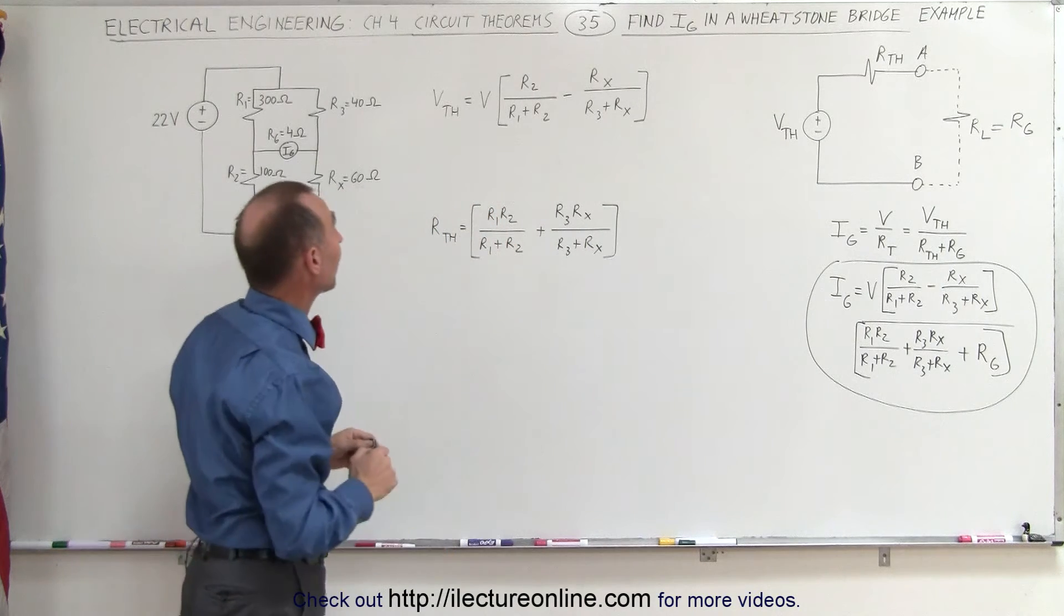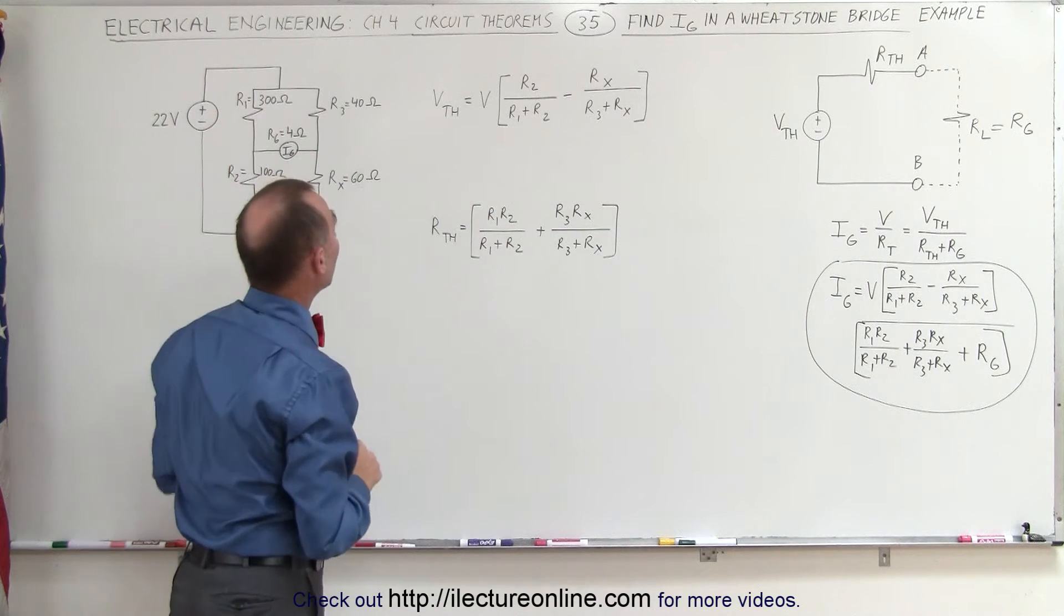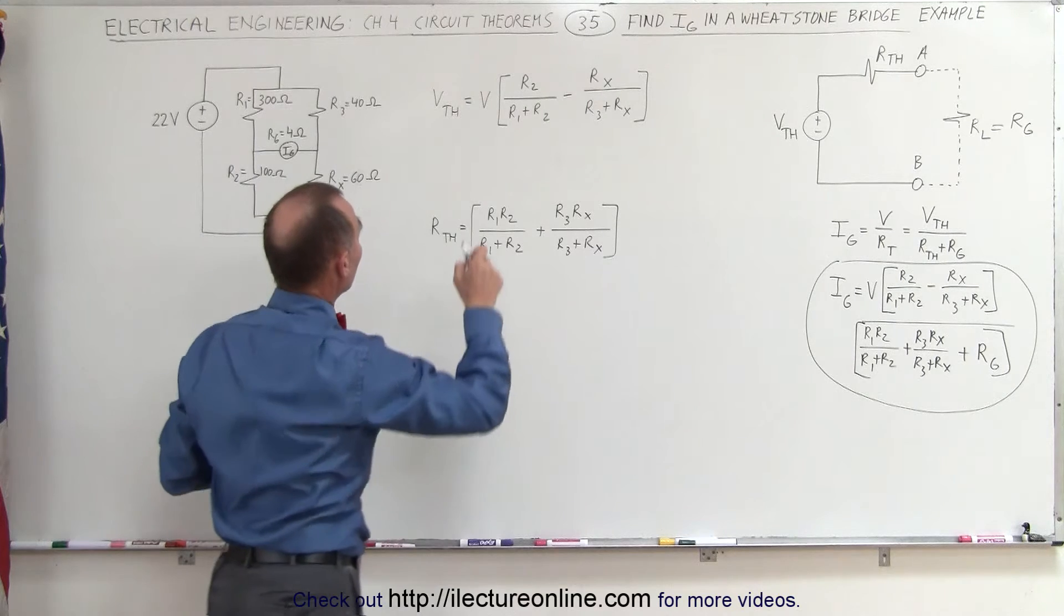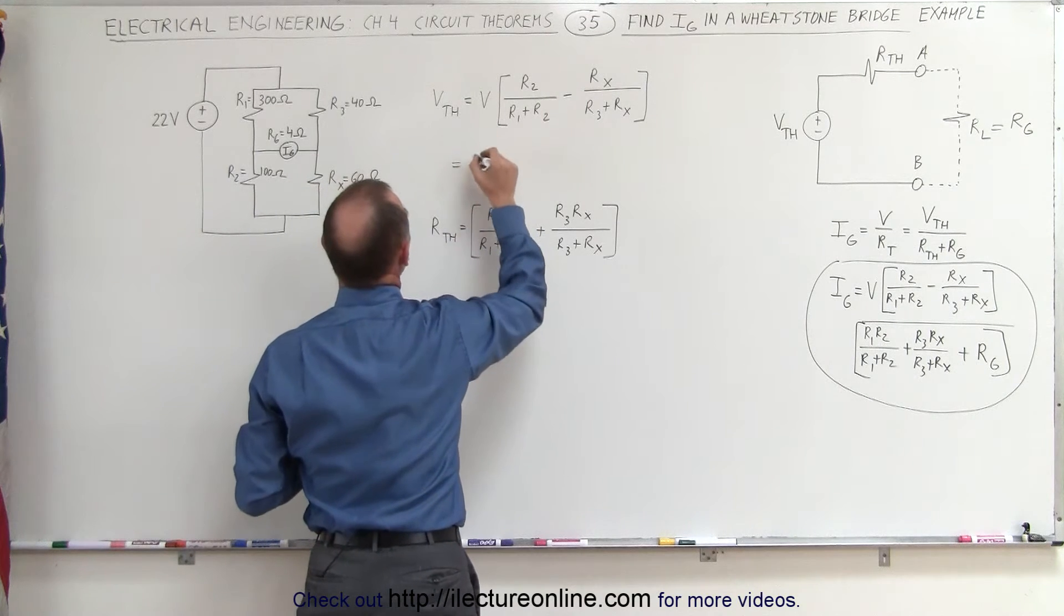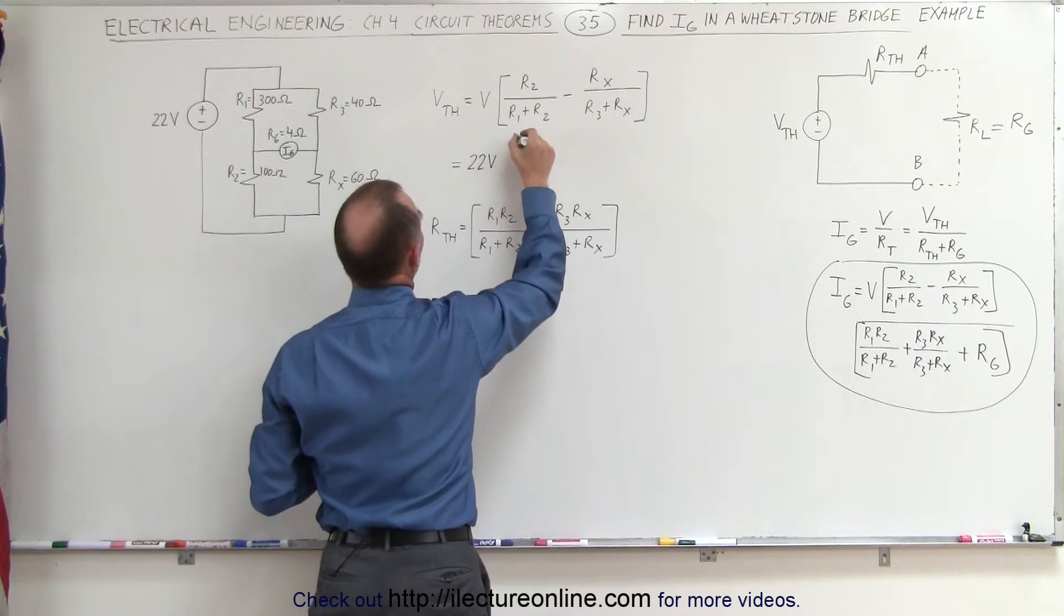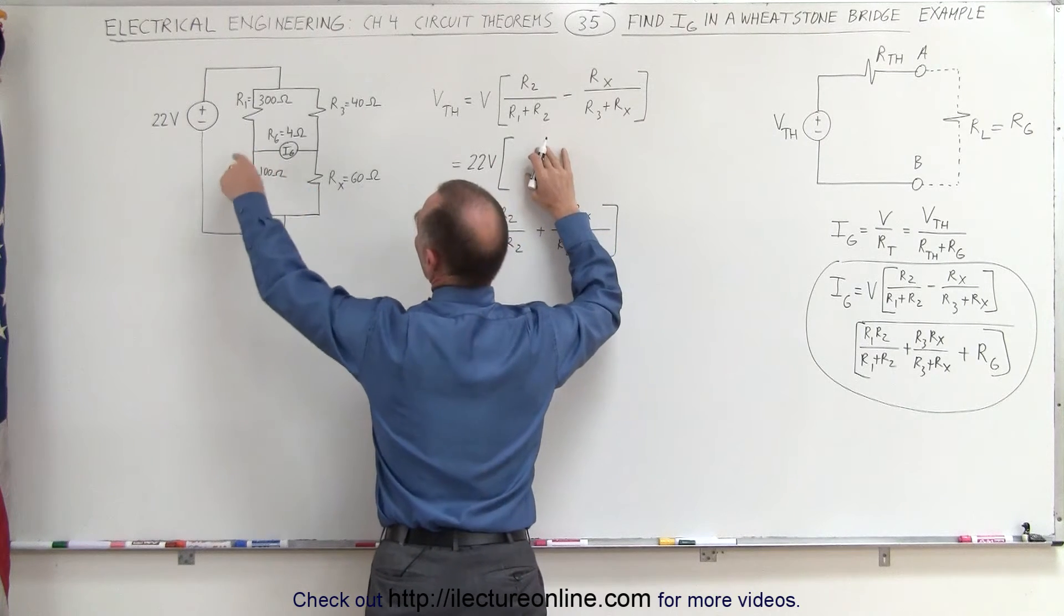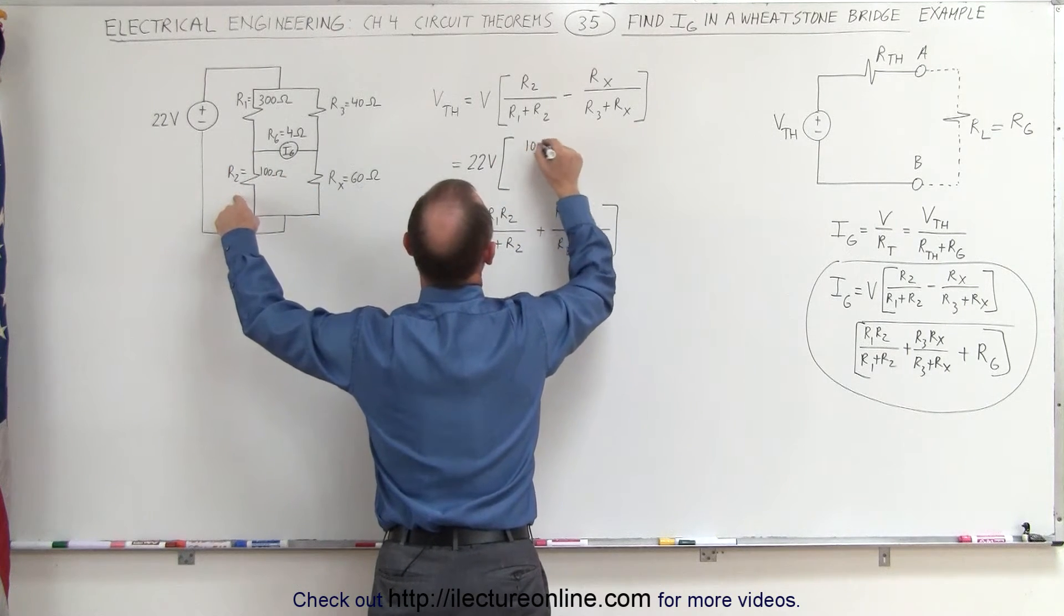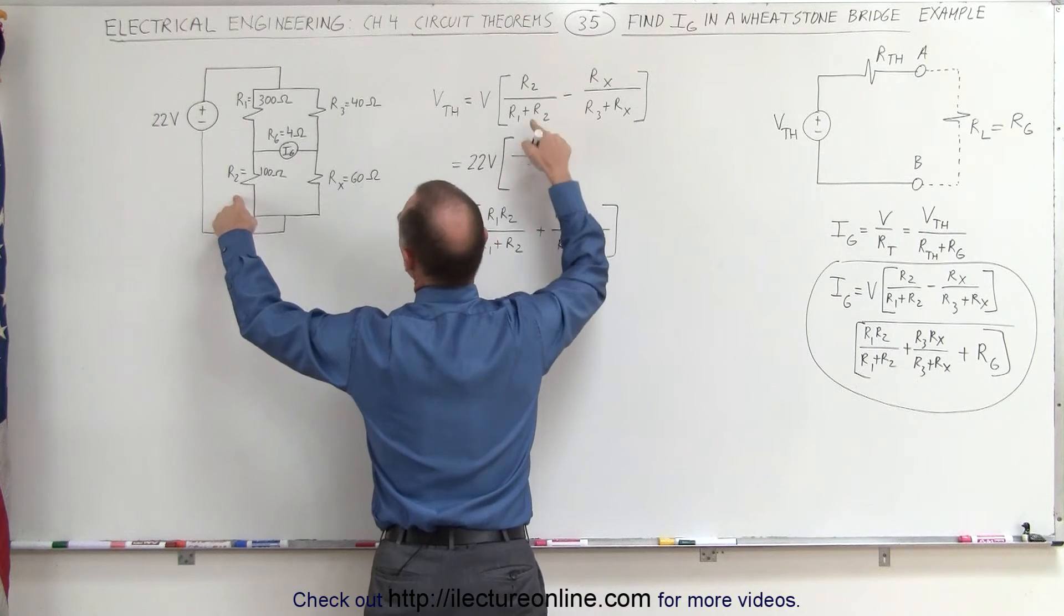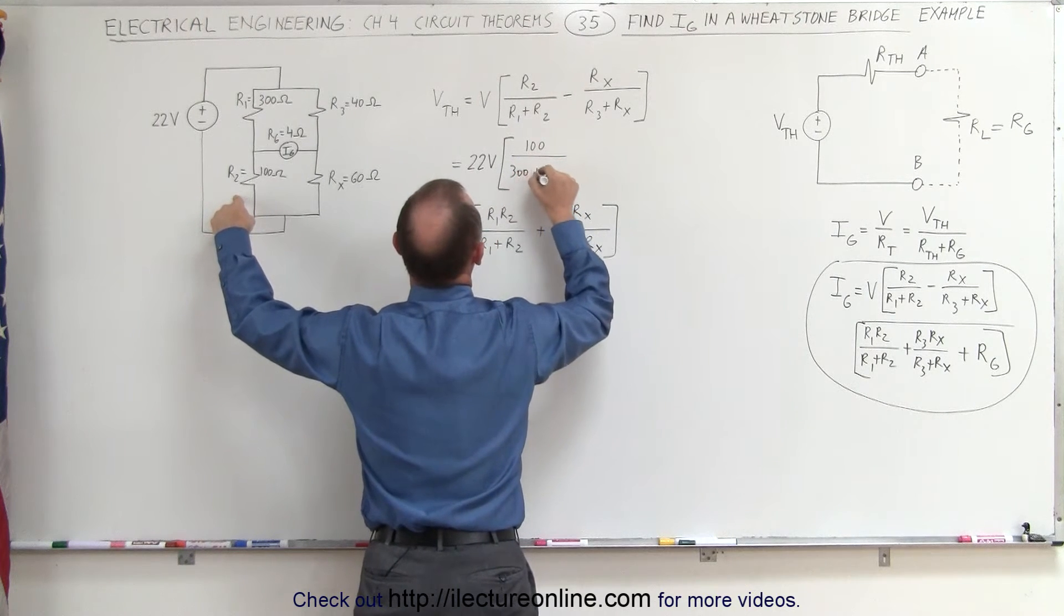So let's go find what these values are with the resistances that we got in the circuit. First of all the Thevenin voltage is equal to the 22 volts of the source, times the ratio of R2, which is 100 ohms, divided by R1 plus R2, which would be 300 plus 100,